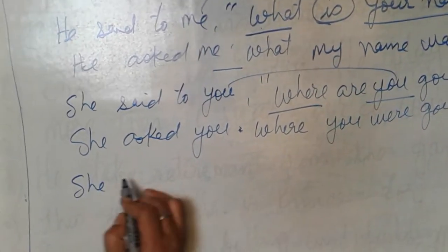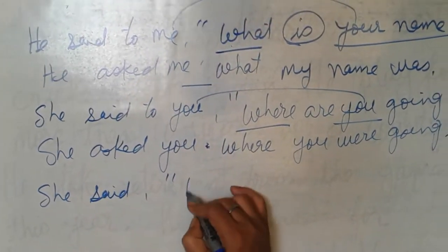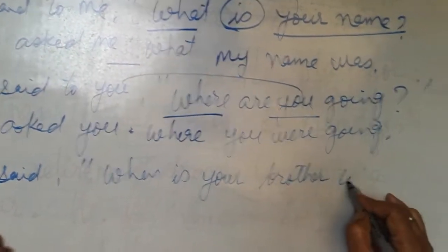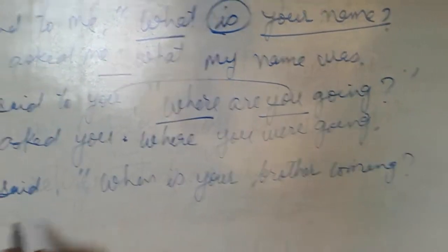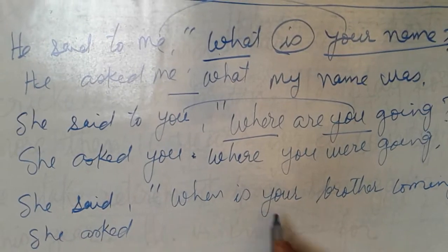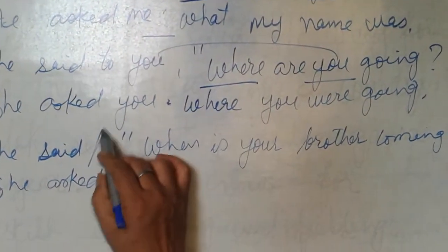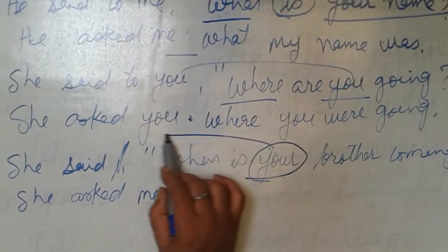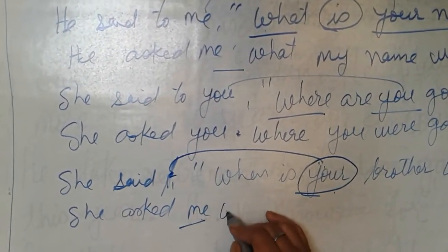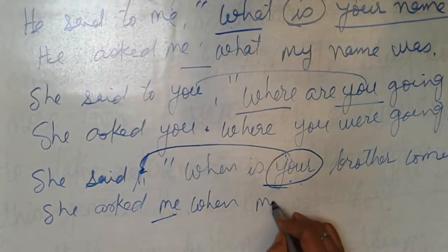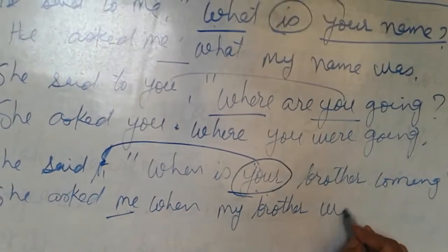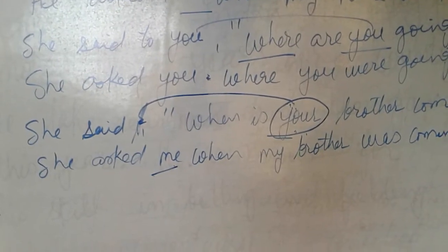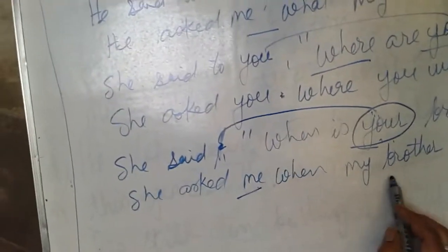Third sentence. She said, 'When is your brother coming?' She asked me when my brother was coming. Here, 'me' is not given in the original — 'you' is given — so for objective case you write 'me' by yourself. 'Is coming' changes to 'was coming'. So the answer is: she asked me when my brother was coming. Full stop.